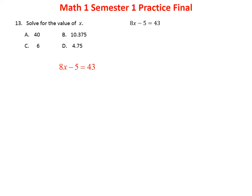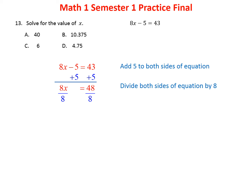Problem thirteen is a basic two-step equation. We undo addition or subtraction first, then multiplication. Adding 5 to both sides gives us 8x equals 48. Then dividing both sides by 8: eight divided by eight is one, leaving x equals 6. The answer is C.